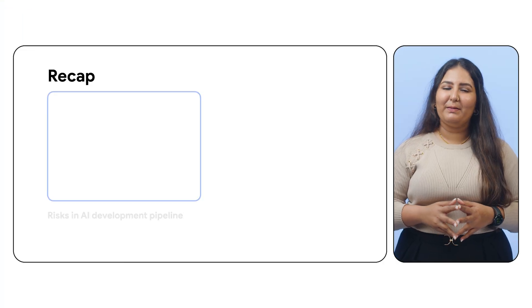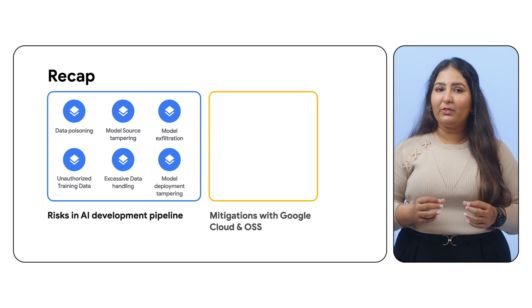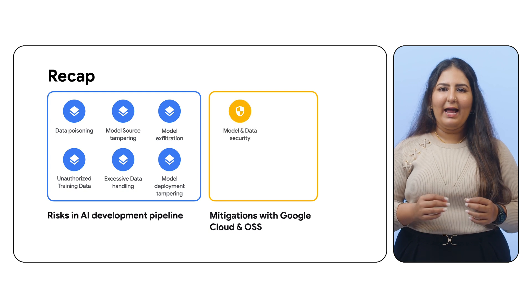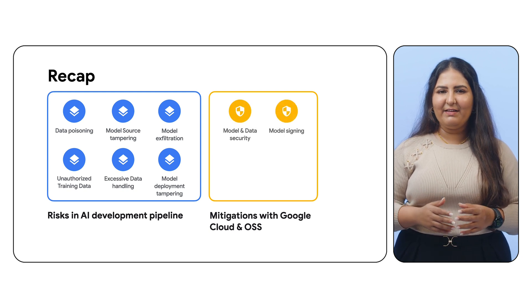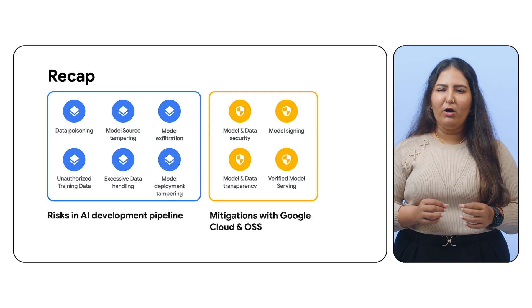In this video, we explored the potential risks in a typical AI development pipeline. We also saw how to mitigate those risks through adopting model and data security practices, model integrity via model signing, development transparency via model and data provenance, and finally, verified model serving to gate bad or compromised models. Congratulations on taking this crucial step towards secure AI development. But the journey doesn't stop here. Remember to integrate core security practices like IAM, encryption, and continuous monitoring throughout your AI development lifecycle. To learn more, check out the resources and best practices linked below. Happy coding!